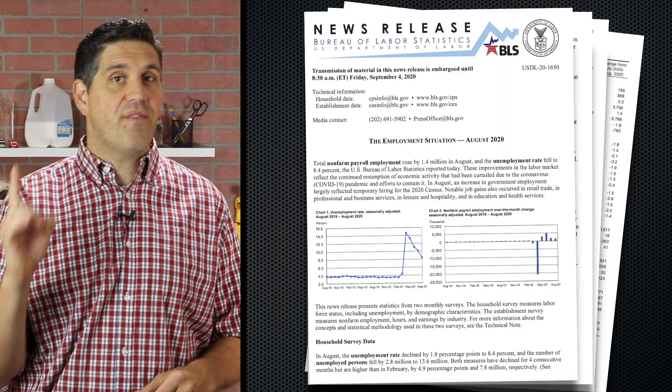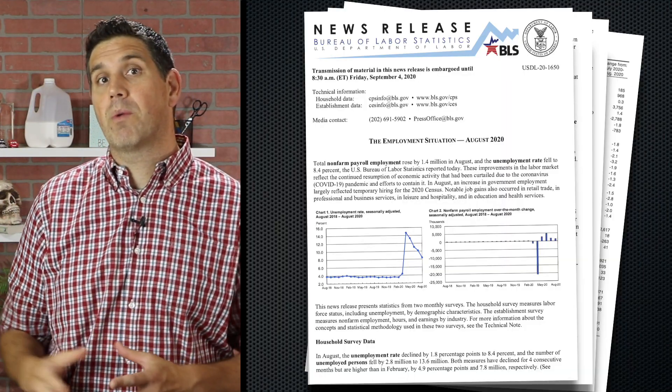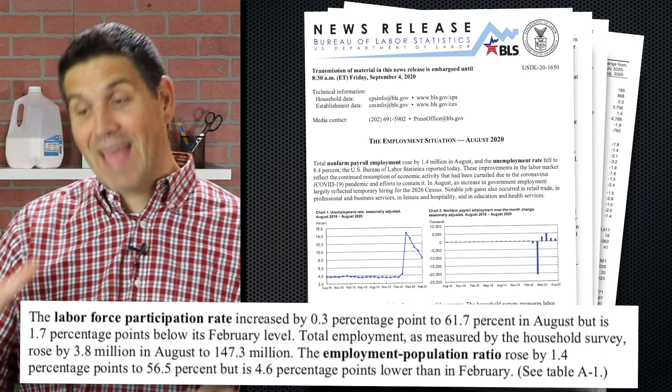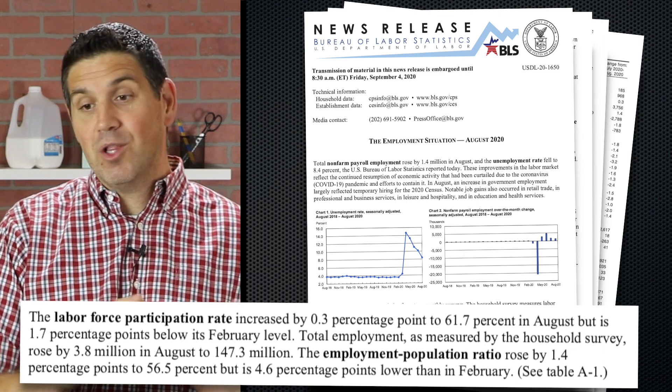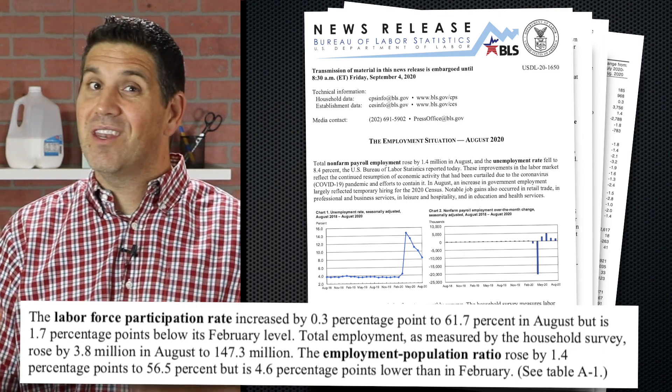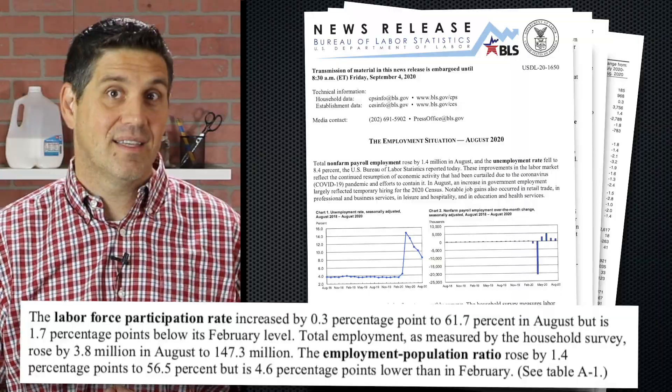In the U.S., crunching the unemployment rate numbers is the job of the Bureau of Labor Statistics, the BLS. The first Friday of every month, they post the numbers and issue a report. You can call them an econ geek, but that report is super interesting and includes a lot of the stuff you need to know to pass an econ class.